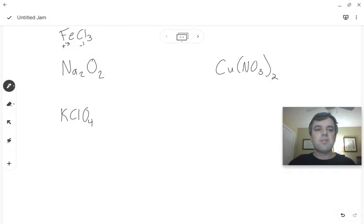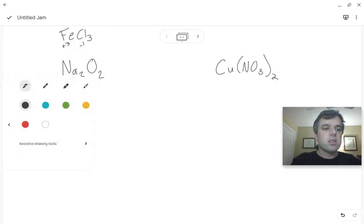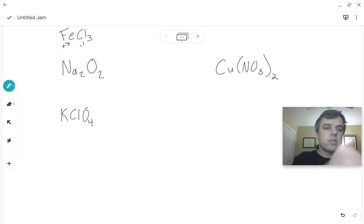So, we're going to take a look at a few more examples. If we have this Na2O2, we know that sodium, because it's in group 1, has to be a positive 1. And if we've got 2 sodiums and 2 oxygens, we've got 2 positive 1s, so our 2 oxygens must be negative 1, because the total charge equals 0.